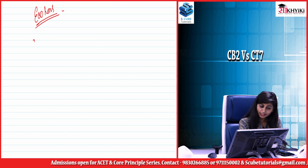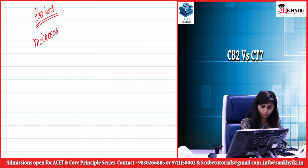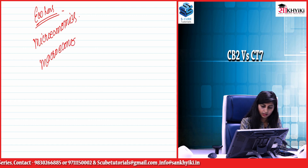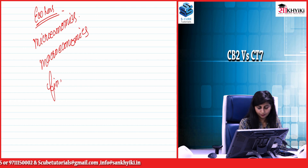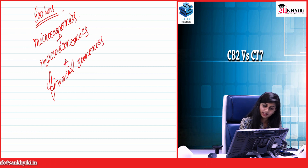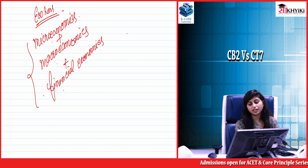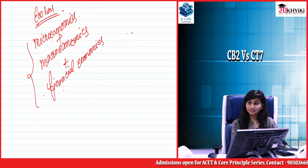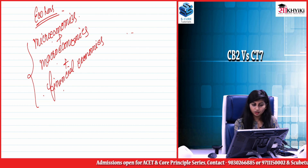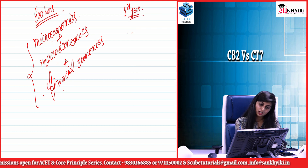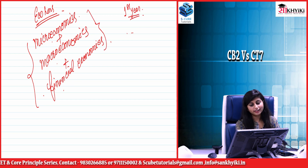In Economics Honours, all the concepts of microeconomics covered over three years, along with macroeconomics and financial economics, are covered in this single CB2 paper. So whatever you learn in three years across microeconomics, macroeconomics, and financial economics is summed up in this one paper. If I compare the CT7 syllabus with Economics Honours, CT7 is roughly equivalent to only a first-year syllabus, whereas CB2 encapsulates all three years.